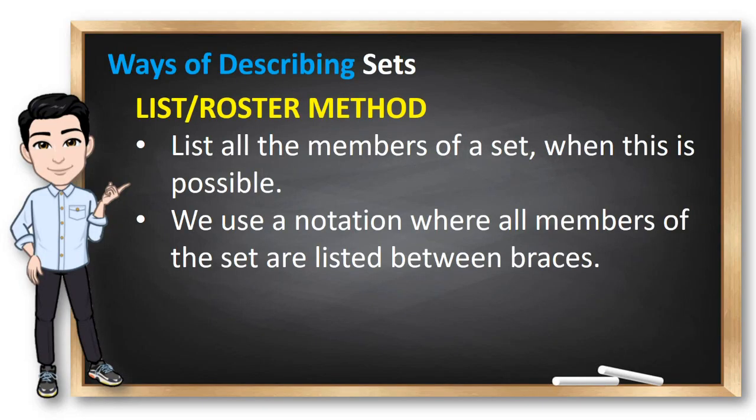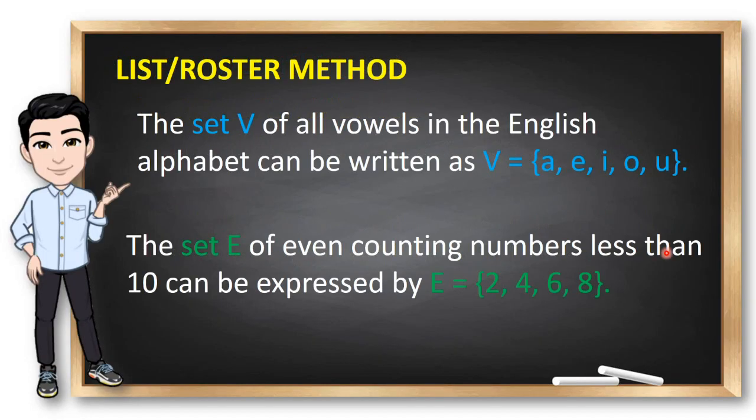There are several ways to describe a set. One way is to list all the members of a set when this is possible. We use a notation where all members of the set are listed between braces. This way of describing a set is known as the roster method. For example, the set V of all vowels in the English alphabet can be written as set V containing A, E, I, O, U. The set E of even counting numbers less than 10 can be expressed by set E containing 2, 4, 6, 8. Notice that 10 is not included here because it's not less than this number.